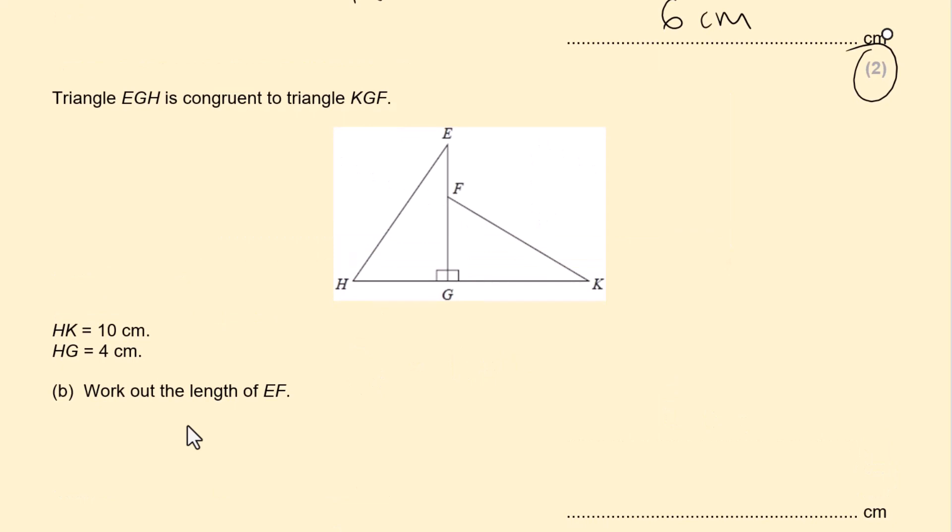Triangle EGH is congruent to triangle KGF. HK is 10. So HK is 10 centimeters. HG is 4 centimeters. So HG is 4 centimeters. Now because they are congruent we can say the corresponding sides are equal. So we can find out what GK is 10 take away 4 which is 6 centimeters. Now GK is corresponding to EG which is this one which is 6 centimeters. But we need to find out what EF is. FG and HG are corresponding. So if HG is 4, FG is 4 as well which is 4 centimeters. So EF will be 6 take away 4. So 6 take away 4 which is 2 centimeters. So this is 2 centimeters. This length here. Okay so the answer is 2 centimeters.